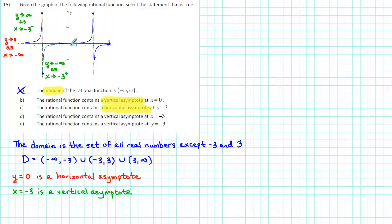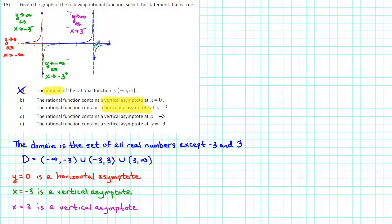Continuing from left to right, we reach the end of the second piece. At the end of the second piece, the y values are increasing without boundary. Symbolically, y approaches infinity as x approaches 3 from the left-hand side. This tells us that x equals 3 is also a vertical asymptote. Just to the right of x equals 3, the y values decrease without boundary. Symbolically, y goes to minus infinity as x approaches 3 from the right-hand side. This reinforces that x equals 3 is a vertical asymptote.